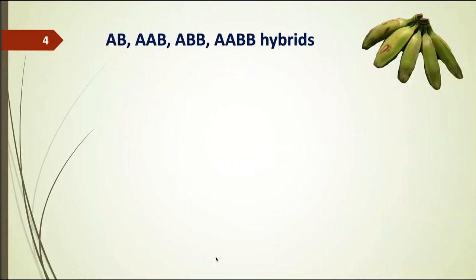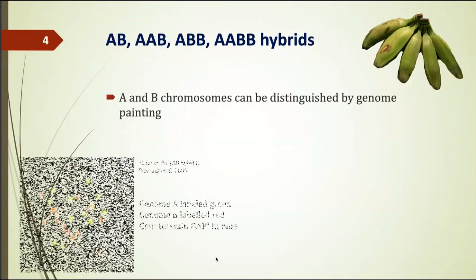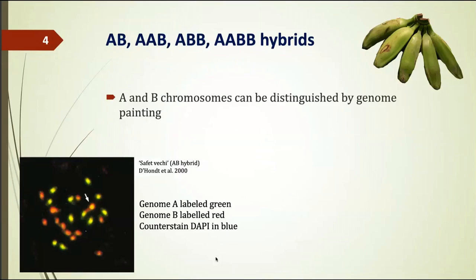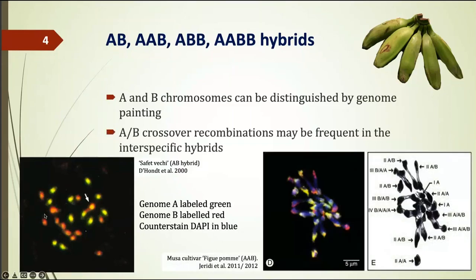What about the situation if you have hybrids between A and B genomes, between Acuminata and Balbisiana? Nowadays we are able to discriminate with a technique known as genome painting. This is a picture from the group of Angelique Gond in CIRAD 2000, in which DNA from genome A was labelled with a green colour and genome B with a red colour. You can see in these chromosome sets that some are green to yellow, which is an overlap, and the others are red — clearly demonstrating there is an A-B hybrid.